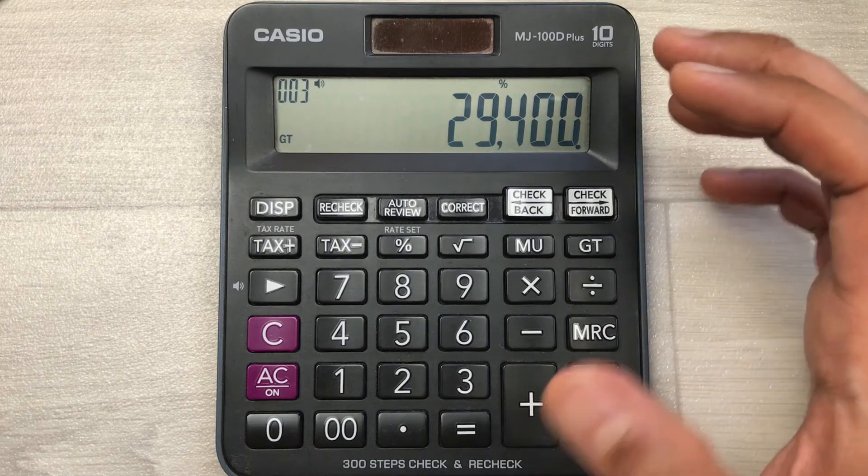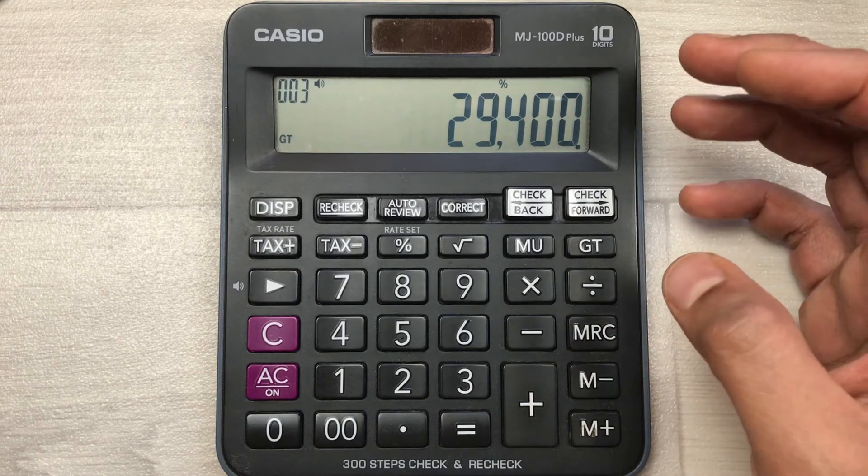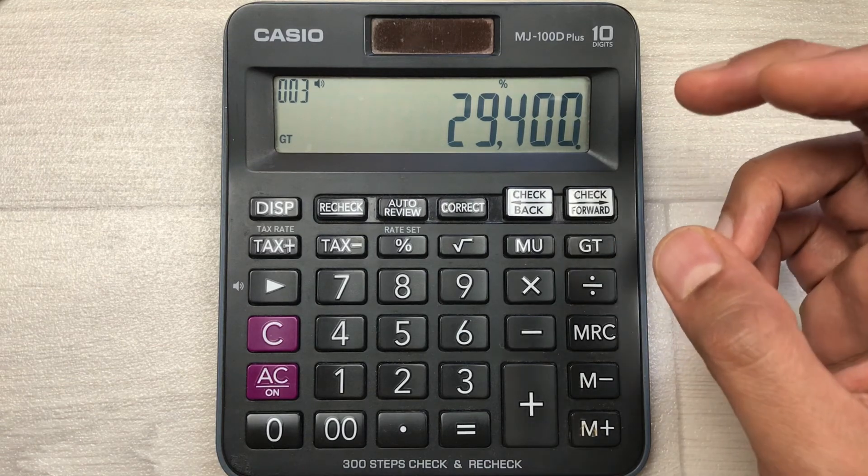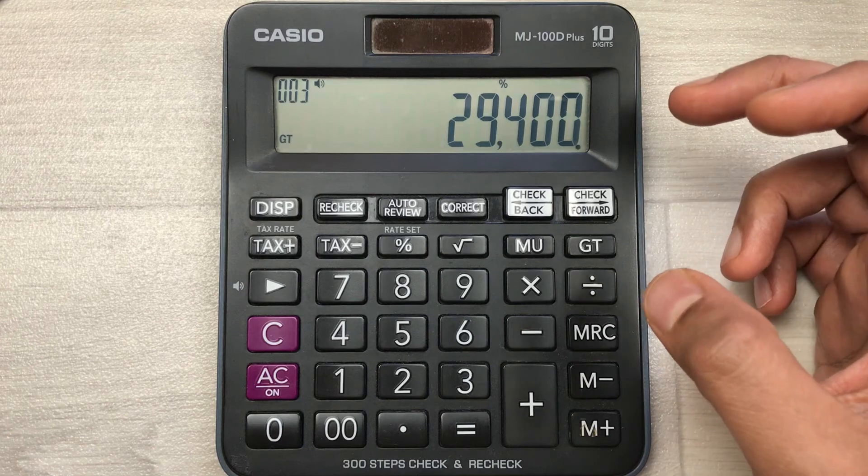So this is the fastest method that you can use to find out the 20% increase in price using your calculator.